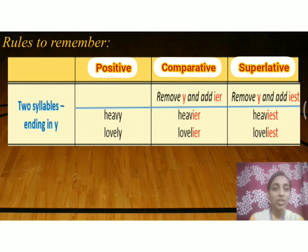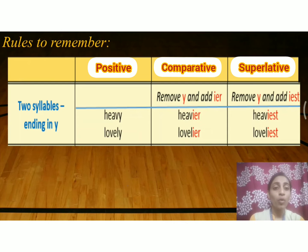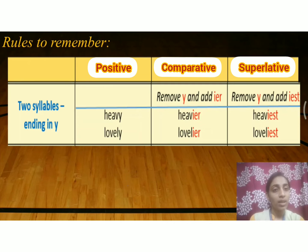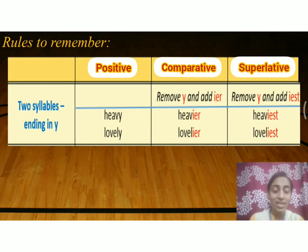Now let us change 'lovely' into its comparative and superlative forms. 'Lovely' is L-O-V-E-L-Y. The comparative form of 'lovely' is L-O-V-E-L-I-E-R: lovelier. The superlative form of 'lovely' is L-O-V-E-L-I-E-S-T: loveliest. Very good.